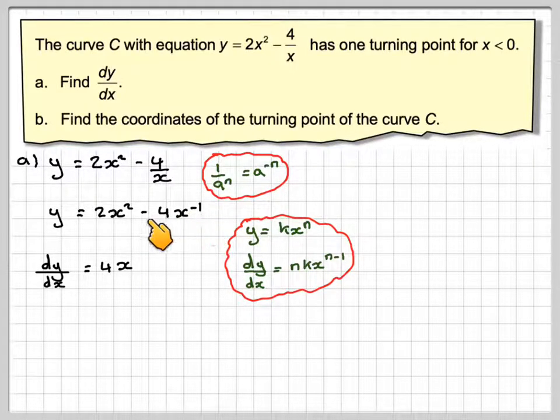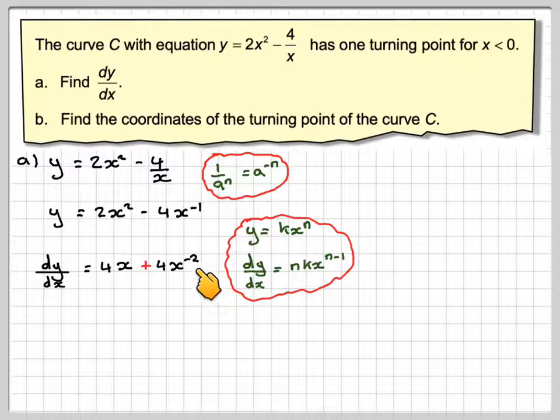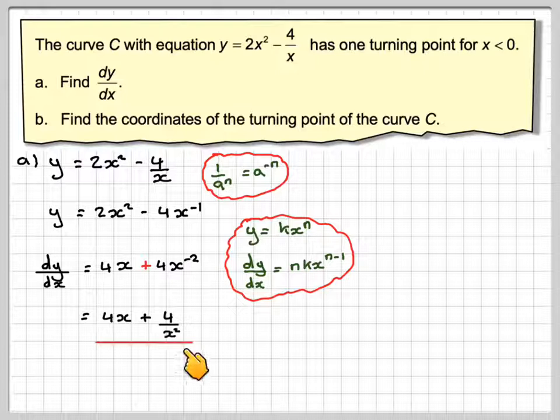Here we've got minus 1 times minus 1, which is going to make plus 4x, and if we take 1 from minus 1, we get minus 2. Applying this rule again, this now becomes 4x plus 4 over x squared.